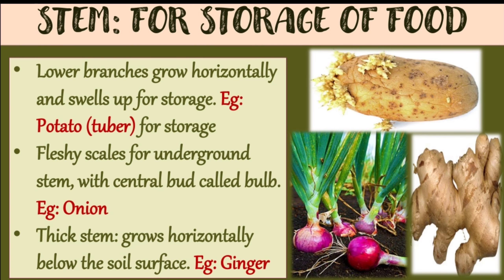The stem is also used for storage of food. In some plants, the lower branches grow horizontally and swell up for storage — an example is potato, which is a tuber. Fleshy scales around an underground stem with a central bulb are called a bulb — an example is onion. There are also thick stems that grow horizontally below the soil surface, called rhizomes — an example is ginger.